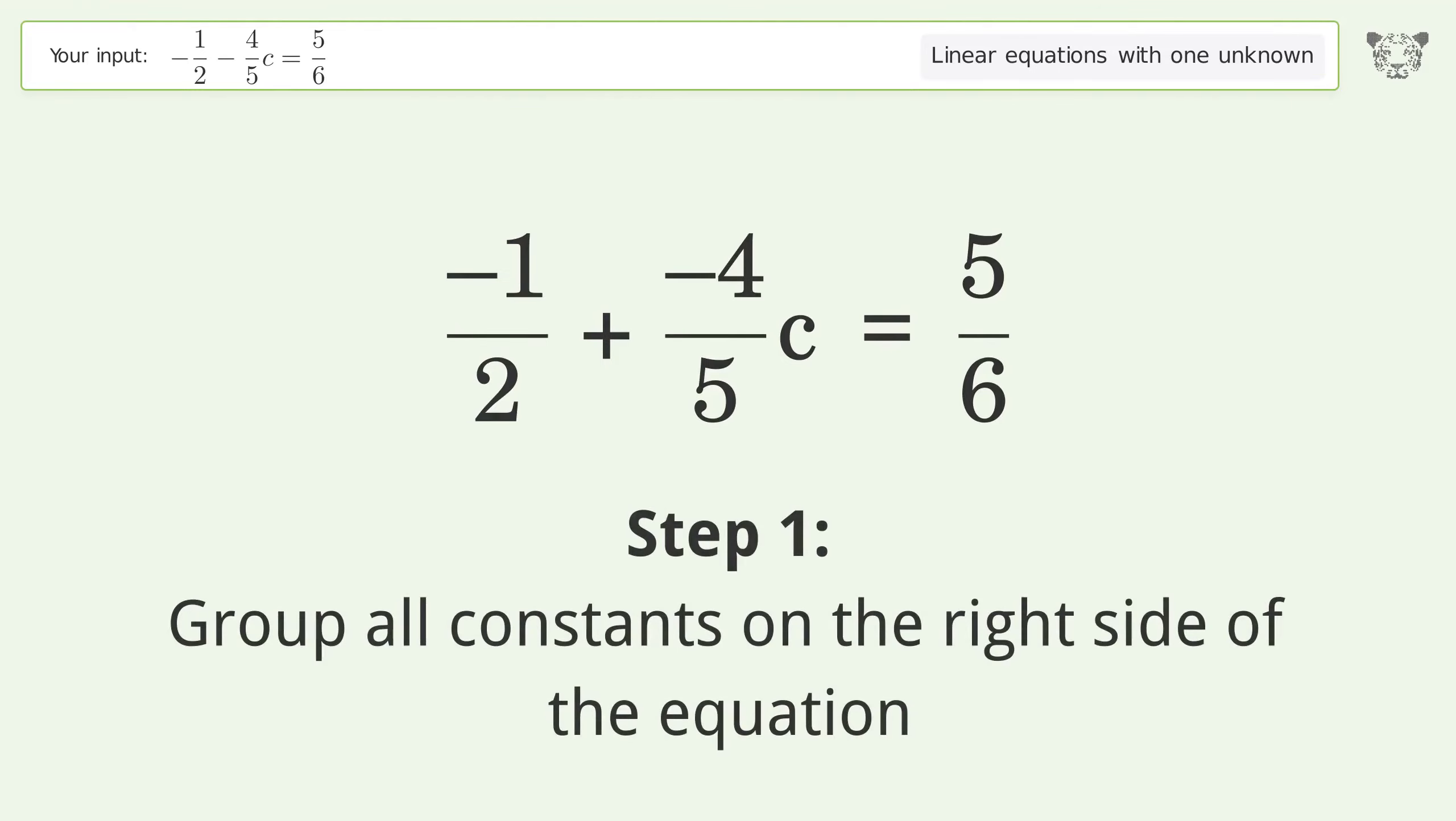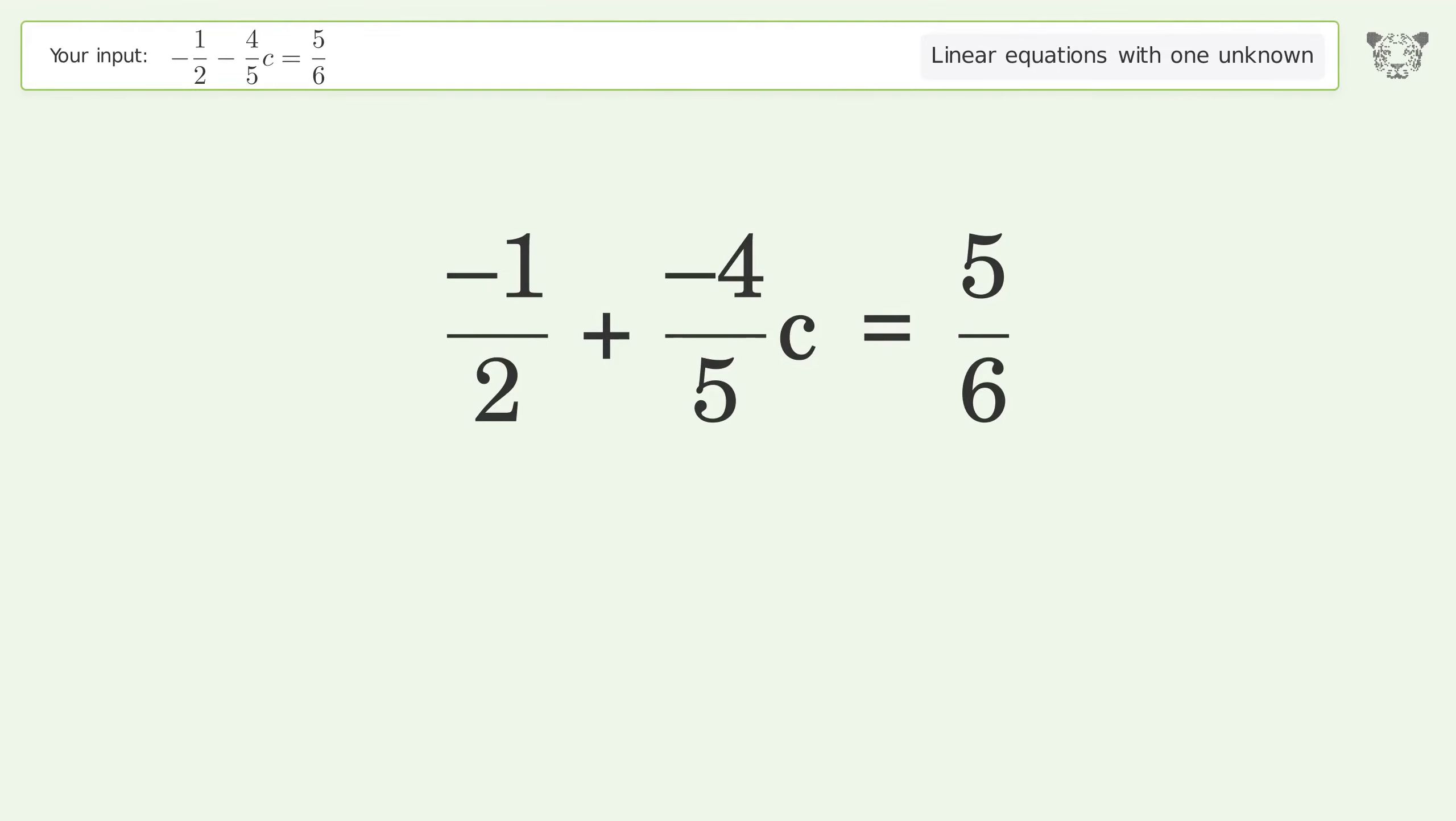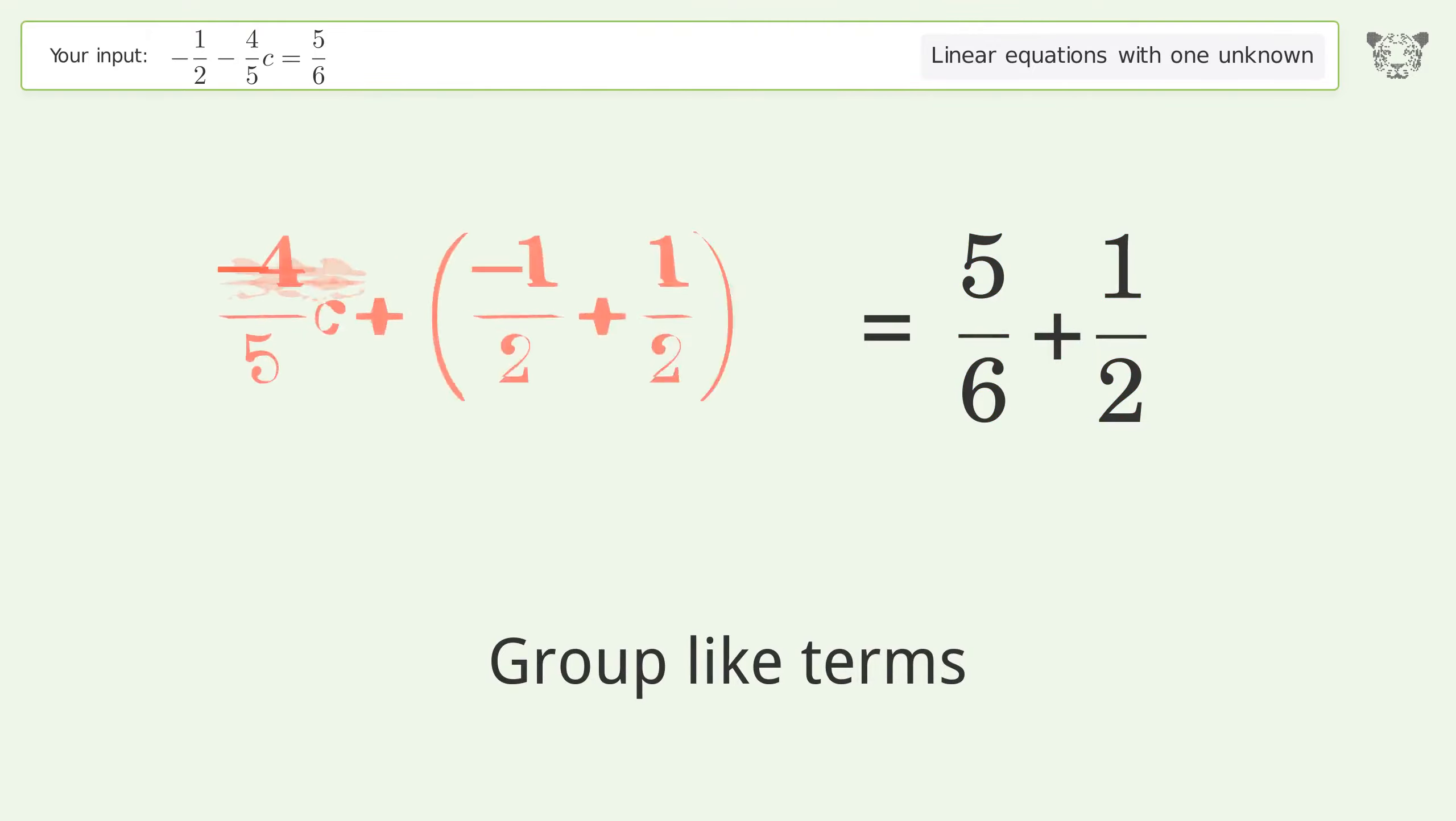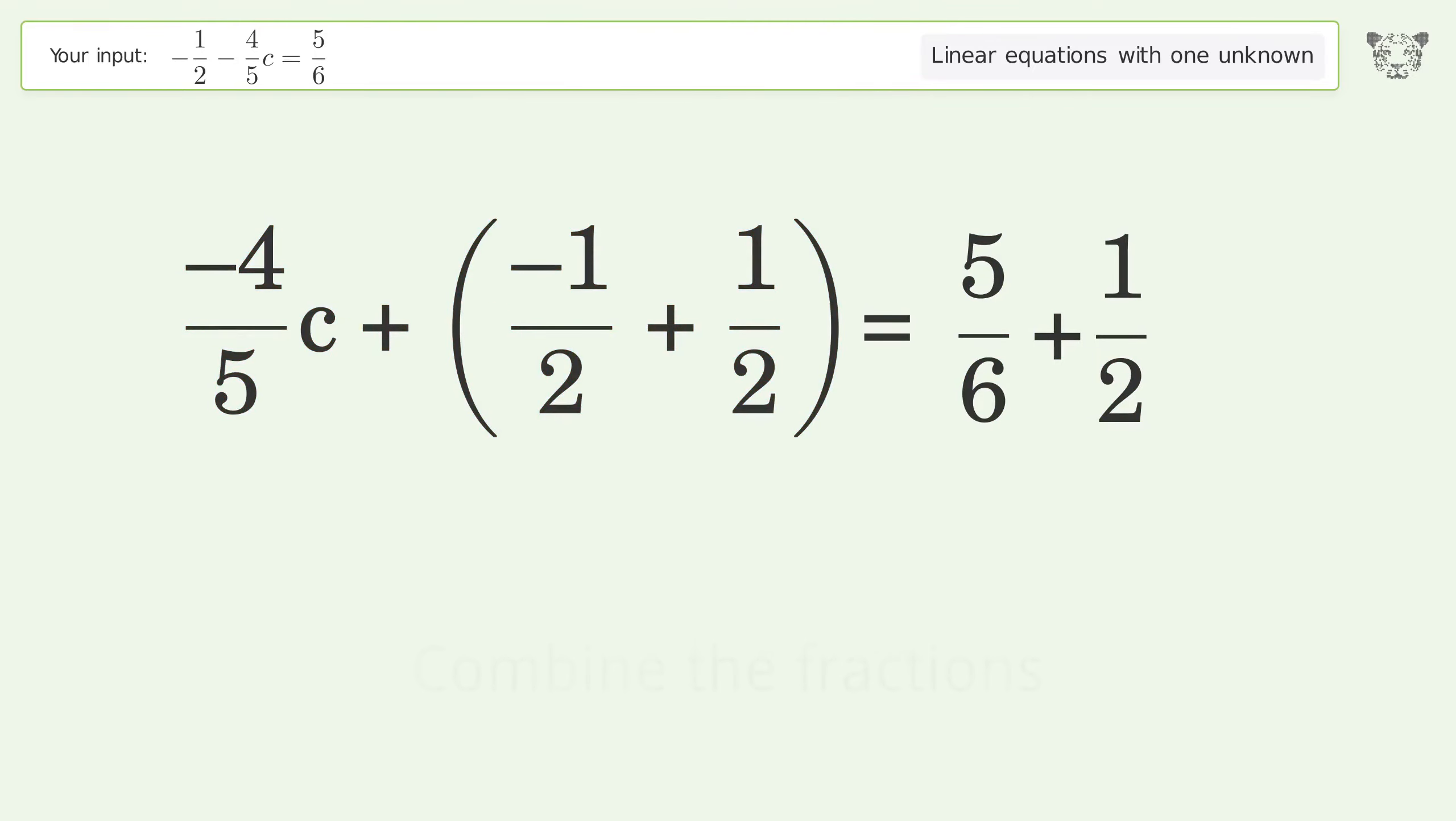Group all constants on the right side of the equation. Add 1 over 2 to both sides. Group like terms and combine the fractions.